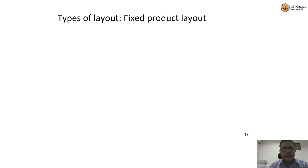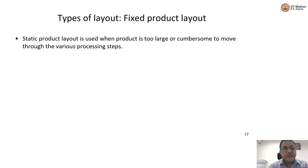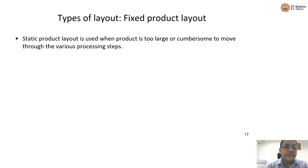A fixed product layout — also called a big product layout — is when the product is too large or too cumbersome to move, so the various processing steps have to move around it. That is called a fixed product layout. Now, a service industry example of a fixed product layout is when you visit a restaurant.